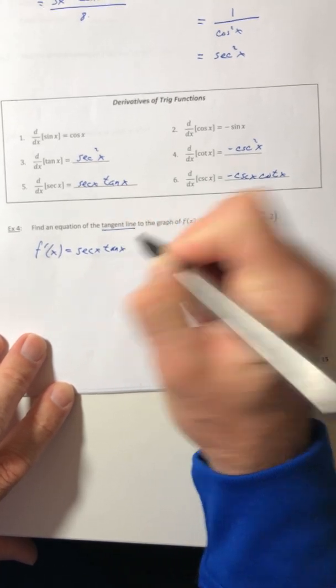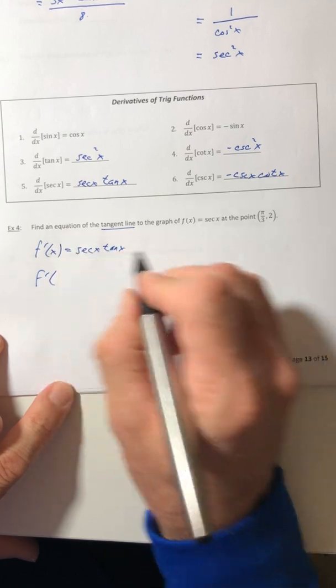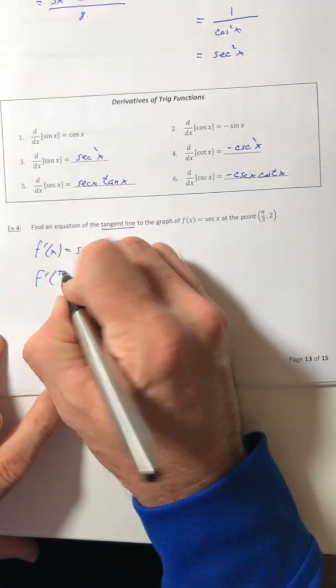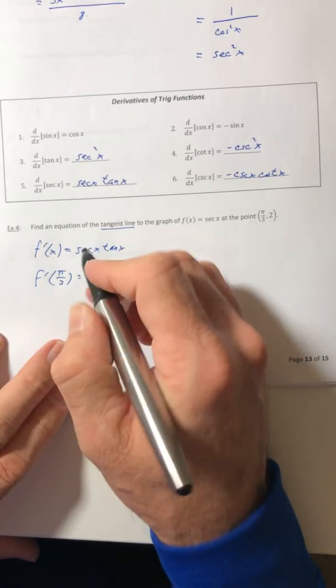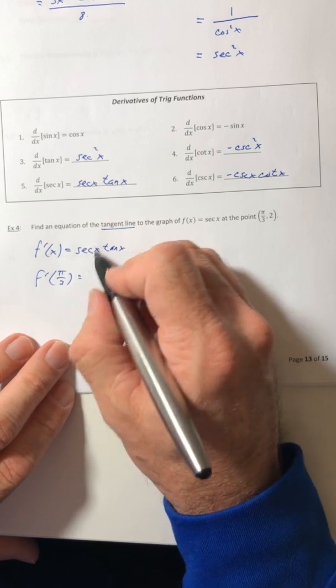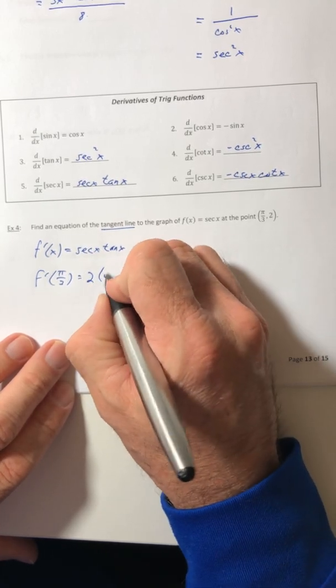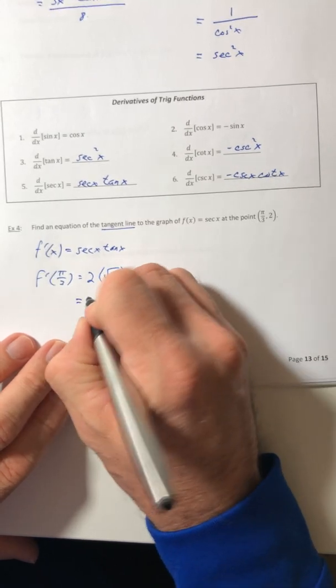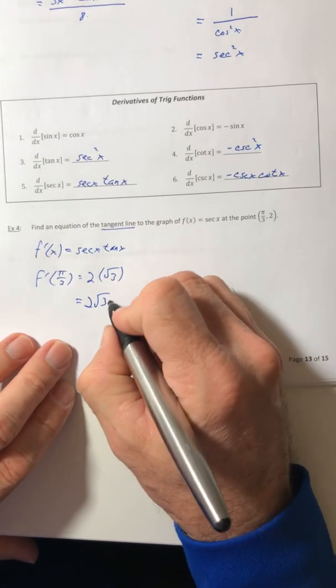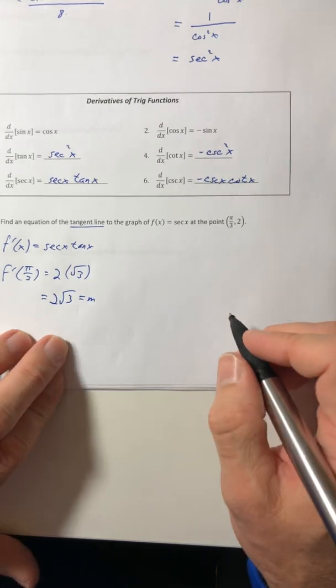So plug in the x value of the point. So secant of pi over three is two. Tangent of pi over three is root three. So that is your slope.